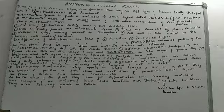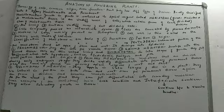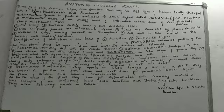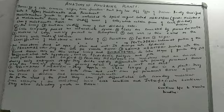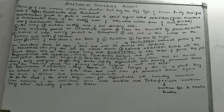Now let us classify meristems on the basis of origin. We have two kinds. First are primary meristems — those meristems which are derived during early embryonic stages. They divide very rapidly, differentiate, and these primary meristems later form the primary permanent tissues. You will mainly find them in the growing apical regions of the root and the shoot.